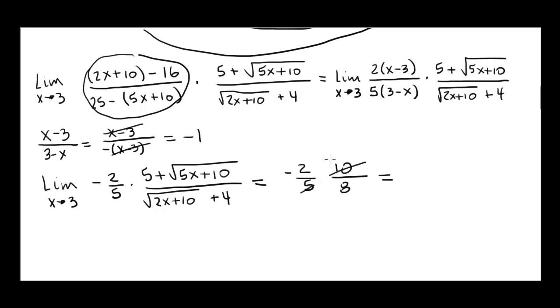All we have to do is simplify this minus 2 fifths times 10 over 8. These cancel here, we get a 2. These cancel here, we get a 4. 2 over 4 is 1 half and then the minus so the final answer is minus 1 half.